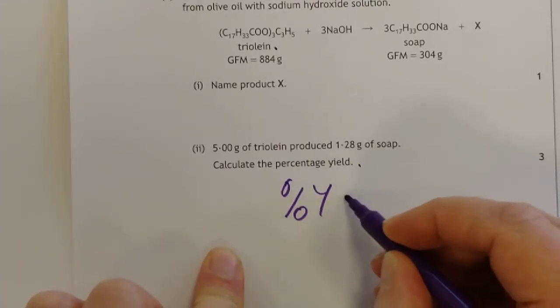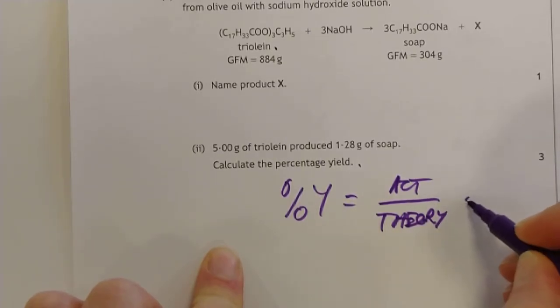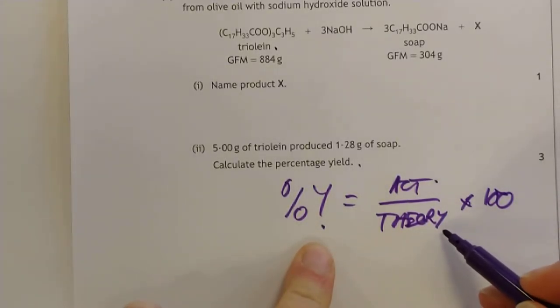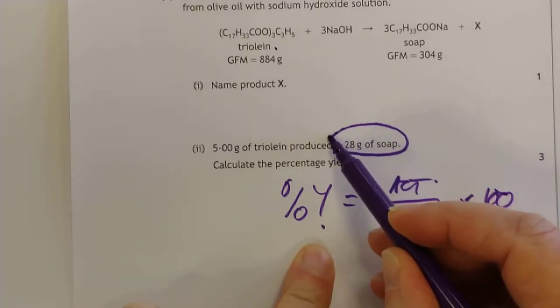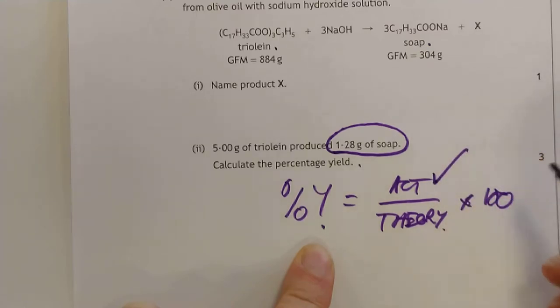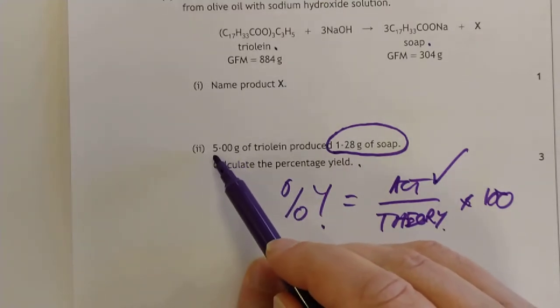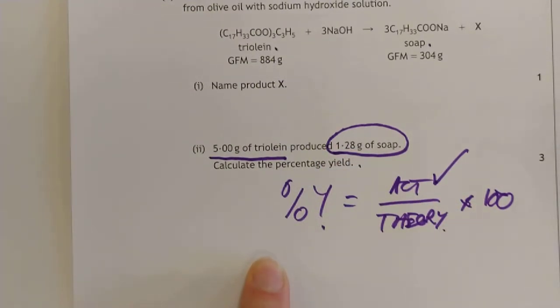So percentage yield equals actual over theory times 100. We're solving for that, so we'll need to know this and this. It says 1.28 grams of your soap, that is your product. We know how much we actually made. At first it's tempting to put that on the bottom line, but 5 grams of triolein is a mass of a reactant. Let's go ahead and calculate how much we theoretically should have made.